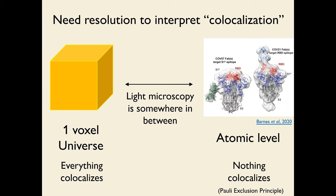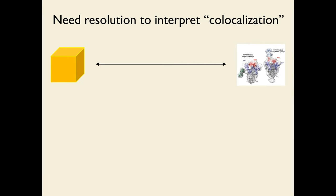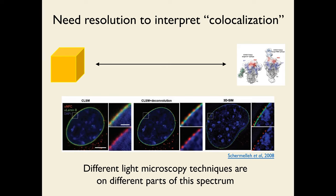Light microscopy explores things somewhere between these two extremes, at different resolutions. For example, a paper compared confocal laser scanning microscopy, confocal plus deconvolution, and 3D structured illumination microscopy — looking at the nuclear pore complex in red and lamin. With a standard confocal there's some overlap; with deconvolution less overlap; and with 3D structured illumination, things that seemed overlapping in a confocal turn out to be merely close to each other but not actually overlapping. So the level of resolution affects your interpretation of co-localization.